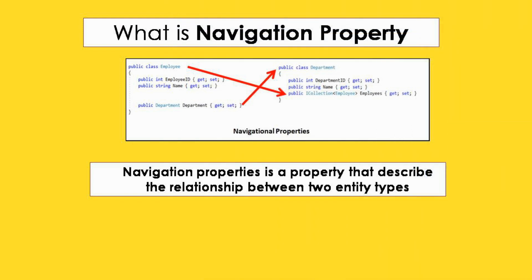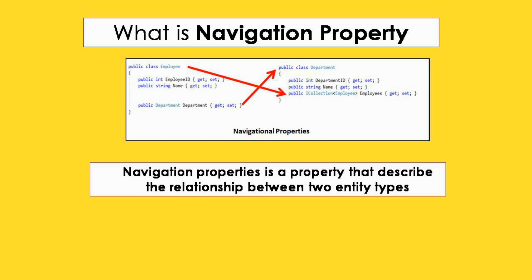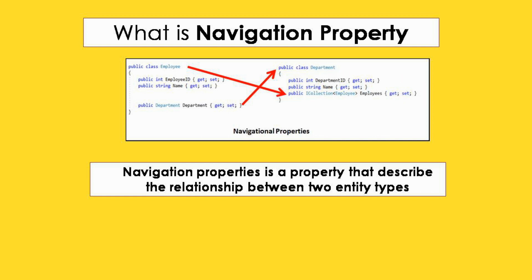Consider the following image. You can see we have two entities: the first one is Employee and the second one is Department. The Employee model is a child model or dependent model, and the Department model is a parent model or principal model. In the Employee model we have a navigation property — the Department property. And in the Department model we have a collection property of Employees. Based on these navigation properties we can say we have a one-to-many relationship: one department has multiple employees, and one employee has one department.